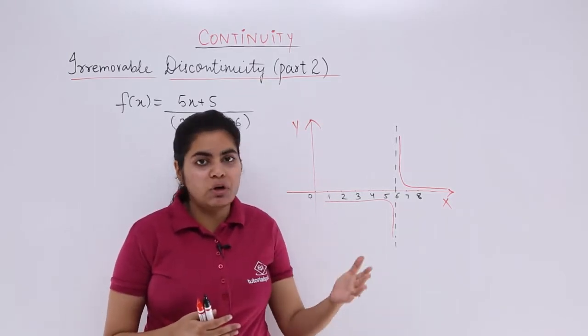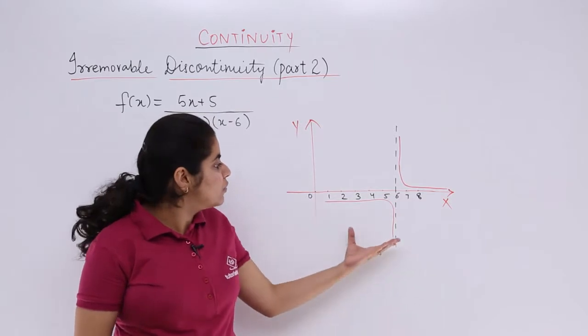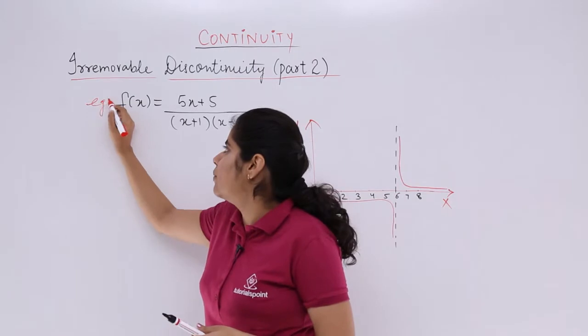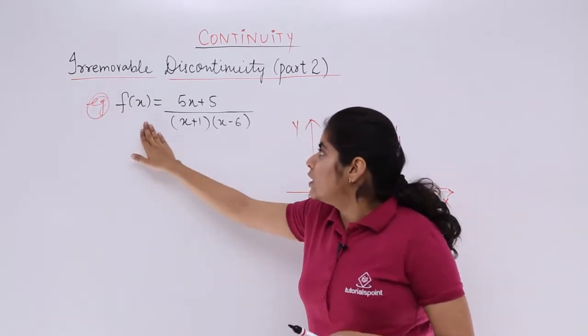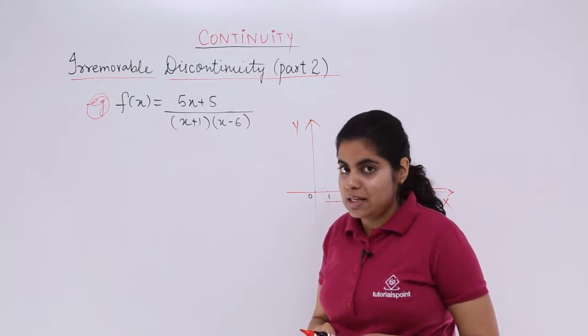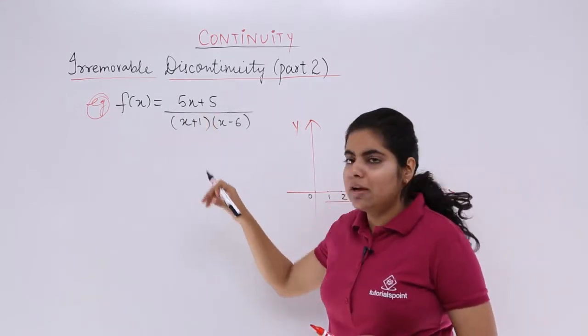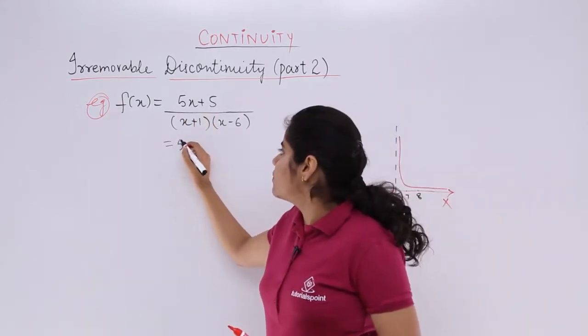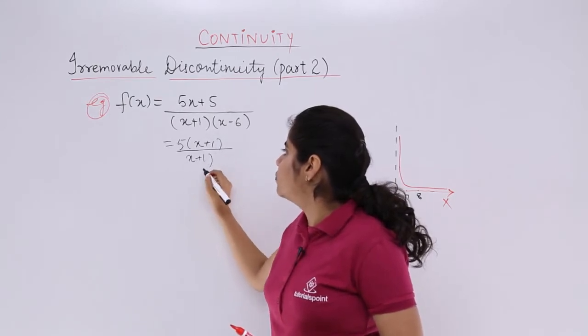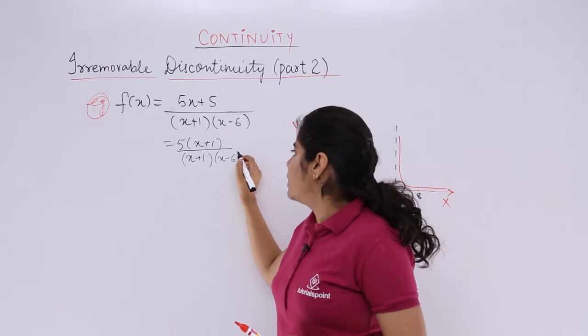The first scenario we already saw. The second scenario, for that we have this graph and we have a function. Example: f(x) is equal to (5x + 5) / ((x + 1)(x - 6)). Now if you see, you can take 5 common, right? So it becomes 5(x + 1) / ((x + 1)(x - 6)).